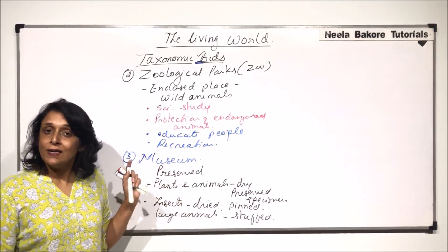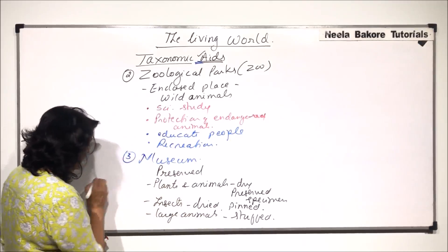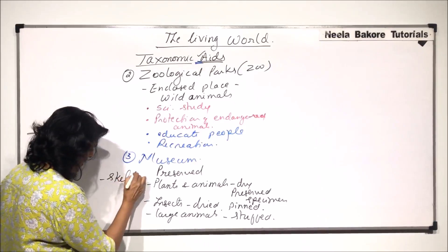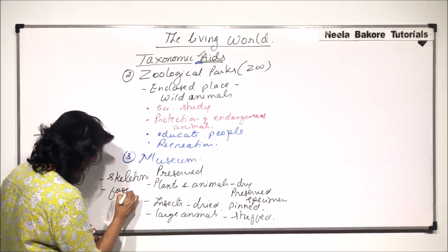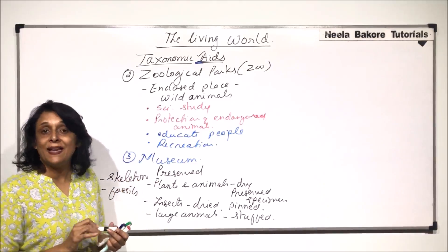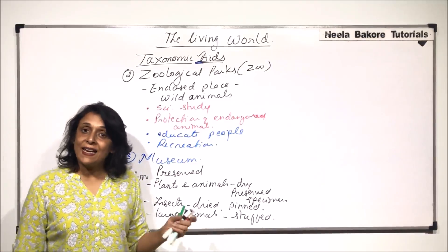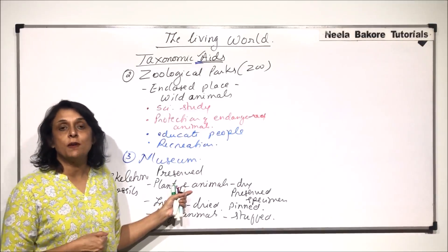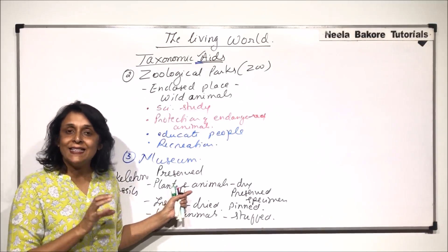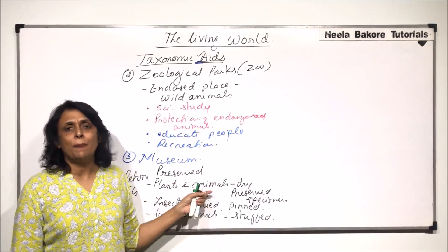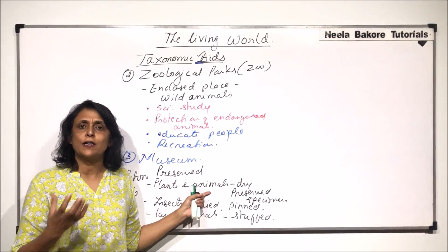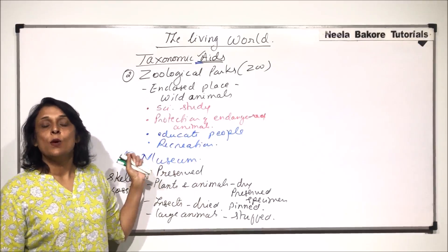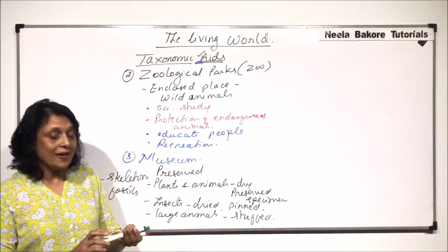For example, a preserved specimen of a tiger lets us see what kind of stripe patterns they have on their skin — again, for study purposes. Museums can also hold skeletons and fossils. The purpose is scientific study so that when we visit, we get a complete idea of the size and fur patterns of animals. Thus, a museum acts as an important taxonomic aid.